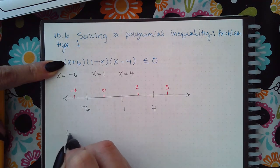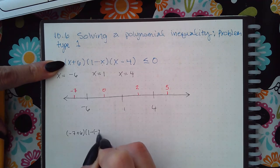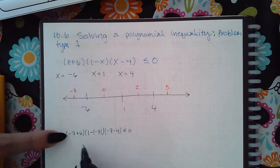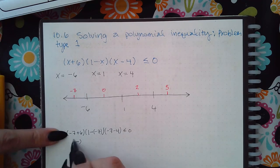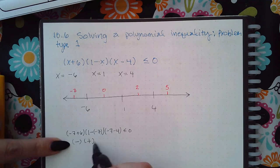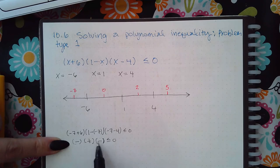So I'm going to have negative 7 plus 6, 1 minus negative 7, and then negative 7 minus 4. And so then I get a negative, it really doesn't matter the number just the sign, this is going to be a positive, this is going to be a negative, and a negative times a positive times a negative will be a negative number.